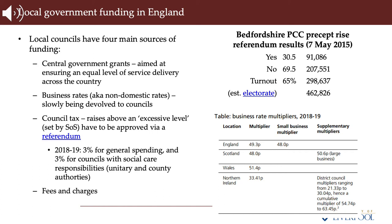The second element in the rates bill is the multiplier, normally expressed in pence per pound. This is set by the UK government for England, the Scottish Parliament for Scotland, and the Welsh Parliament for Wales. In Northern Ireland, district councils set one multiplier and the Northern Irish Executive sets a further one. The business rate liability is calculated by multiplying the rateable value by the multiplier — for example, a property with a rateable value of £100,000 and a multiplier of 49.3p in the pound would have an annual liability of £49,300.